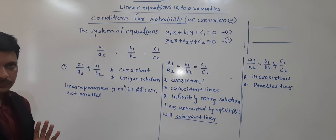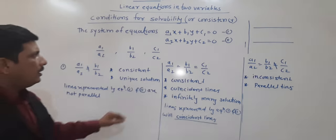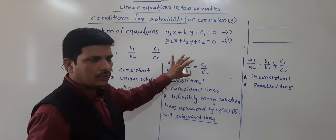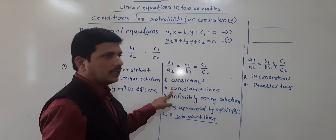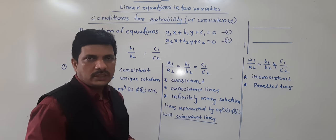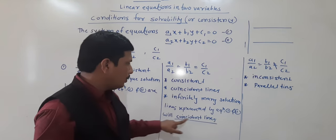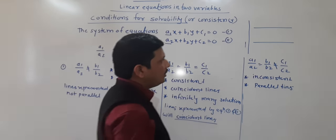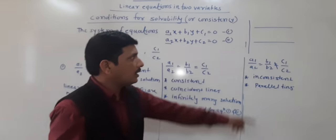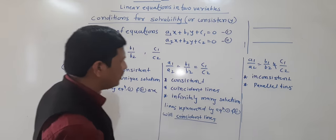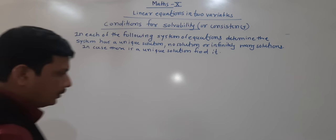Summary of all three conditions: First — when a1/a2 is not equal to b1/b2, it is consistent with a unique solution; lines are not parallel and will intersect. Second — when a1/a2 = b1/b2 = c1/c2, it is consistent with coincident lines, meaning infinitely many solutions. Third — when a1/a2 = b1/b2 but not equal to c1/c2, it is inconsistent and lines are parallel.